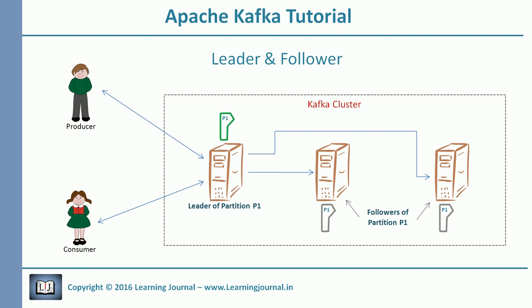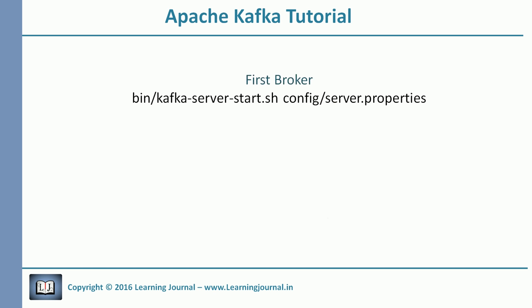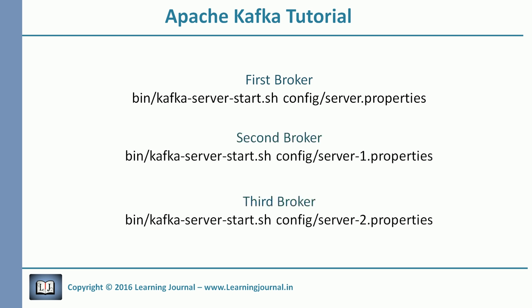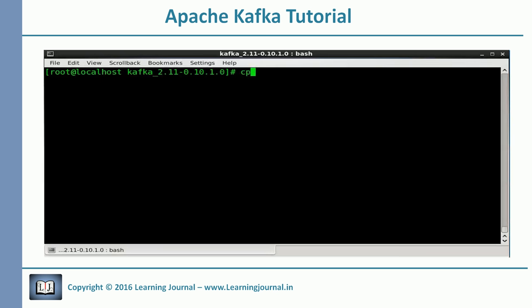I already started a Kafka cluster with my first broker in an earlier video. Now I am going to start two more brokers on the same machine. We used the kafka-server-start.sh command with the server.properties file as a parameter. We will follow the same method to start two more brokers. But before that, we will make a copy of the broker config file and modify it — we can't start multiple brokers using the same properties. So let's make two more copies of the original properties file, modify them, and then use these modified files to start two more brokers.